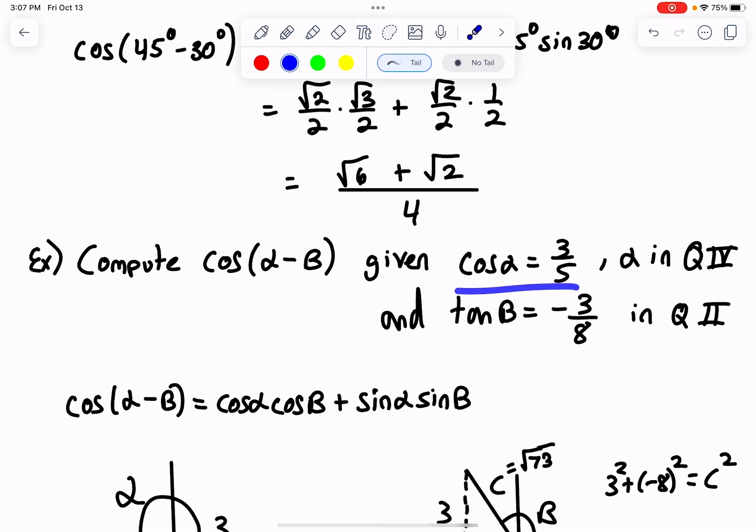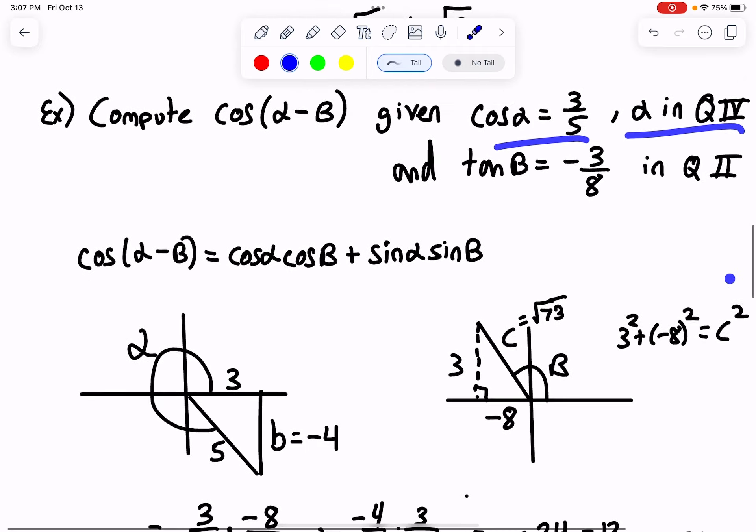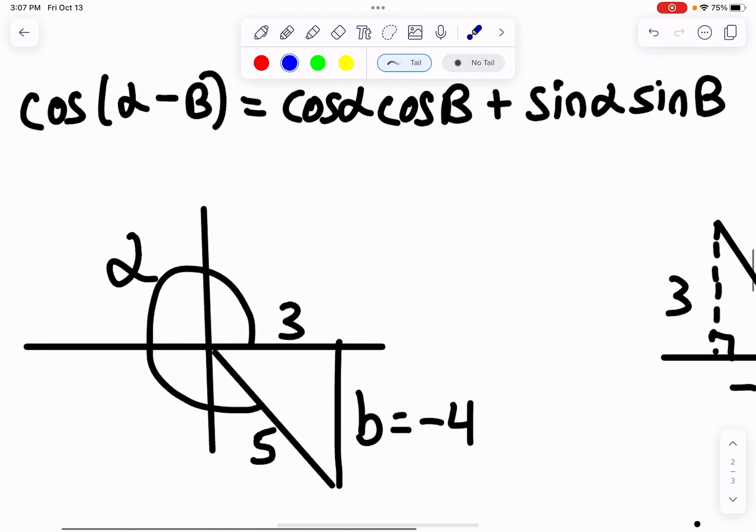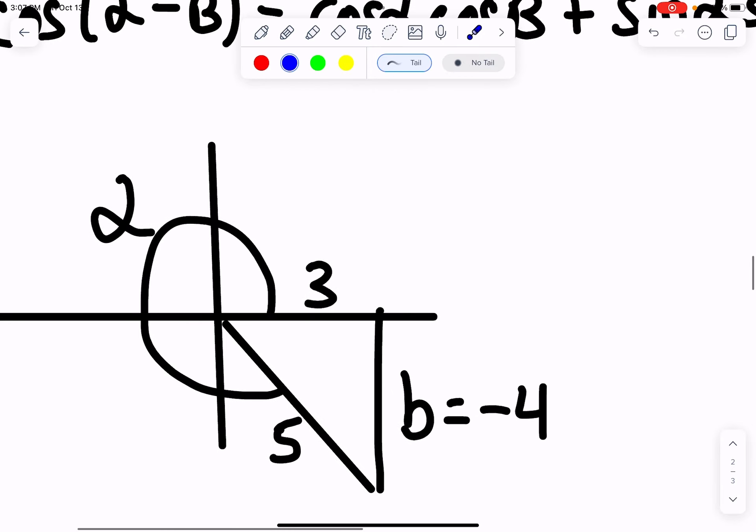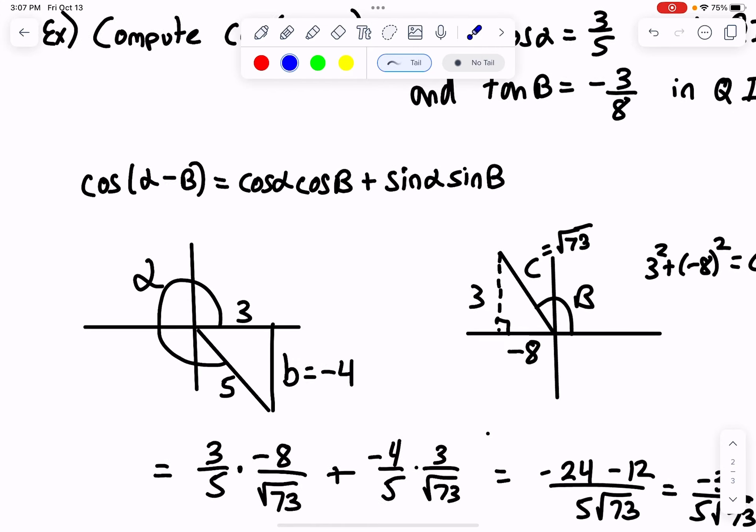For cosine alpha equals three-fifths in the fourth quadrant, we can draw a picture like this: alpha here in the fourth quadrant. Cosine is three-fifths, which is adjacent over hypotenuse. We use the Pythagorean theorem to find the third side, which gets a negative sign because we're in the fourth quadrant where the y-value is negative, below the axis.